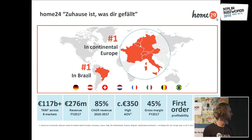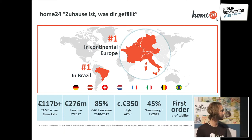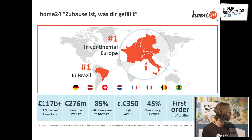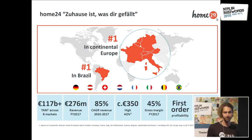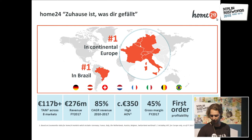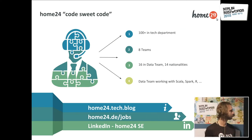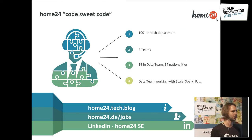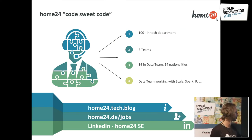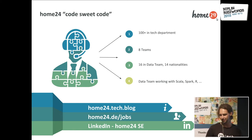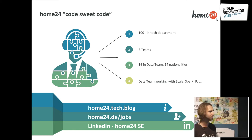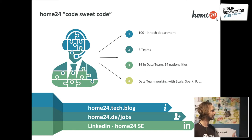Home24 is Europe's largest e-commerce website for furniture, active in seven European countries and Brazil. And we have a large and diverse tech team, where among other things on the data team, we work with Scala, Spark, and many of the latest, greatest AWS technologies.